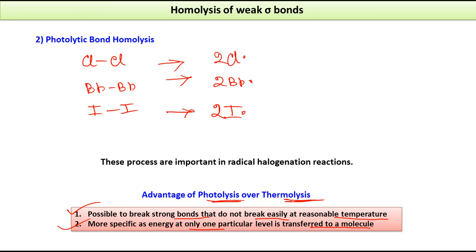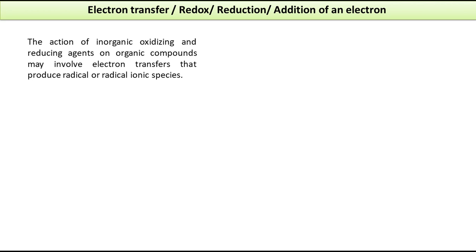The next method is electron transfer, which can also be called a redox process. An electron is transferred from one species to another. From the perspective of the molecule receiving the electron, it is reduction; from the other species, it is oxidation. This can also be described as addition of an electron.